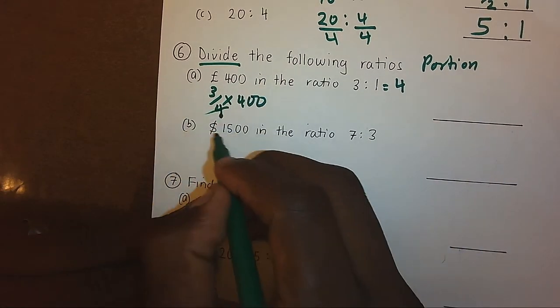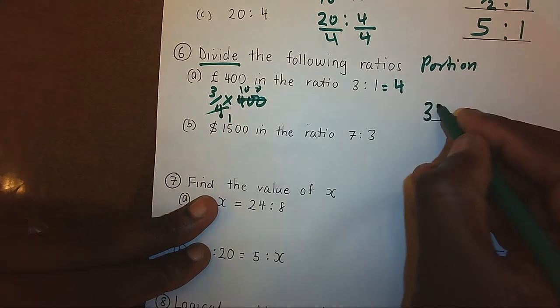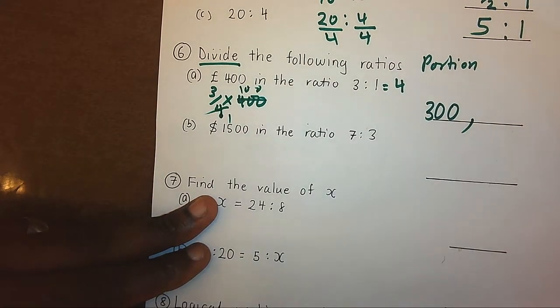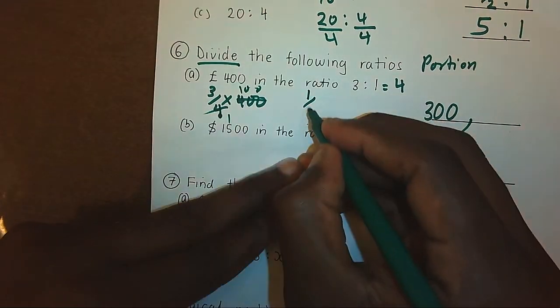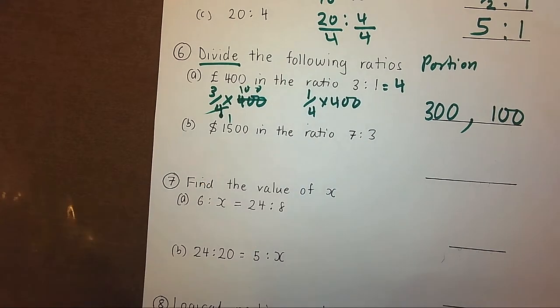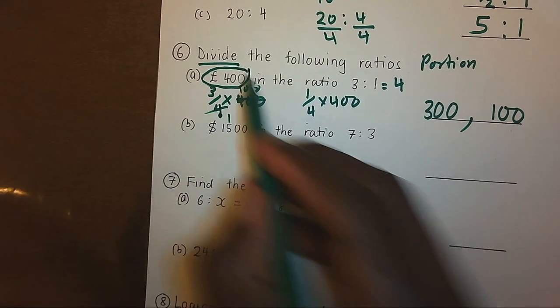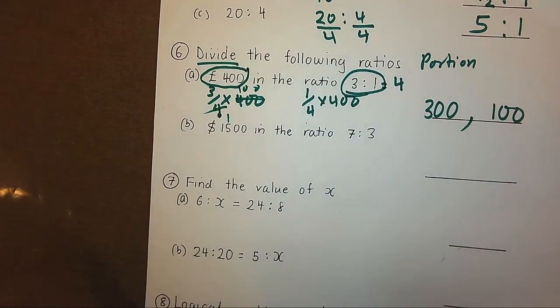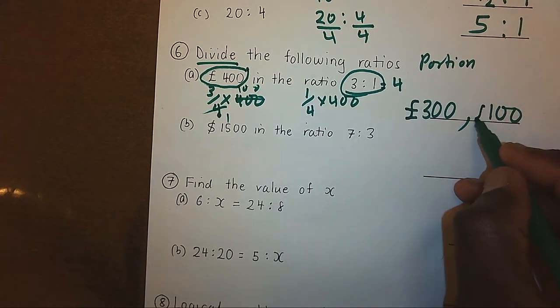This will give me 3 times 100, meaning 300. And the other value will be 1 over 4 times 400, giving me 100. What are you doing? I have divided 400 into this ratio, so I'll have these parts and those parts.